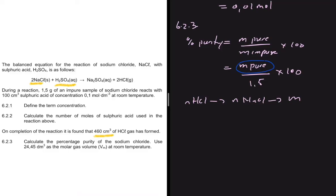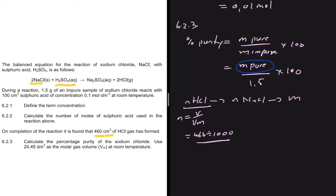Let's calculate the number of moles of HCl. Moles equals volume divided by molar gas volume. The volume is 460 cm³, which we convert to 0.46 dm³ by dividing by 1000, then divide by 24.45. This gives us 0.0188 moles of HCl.